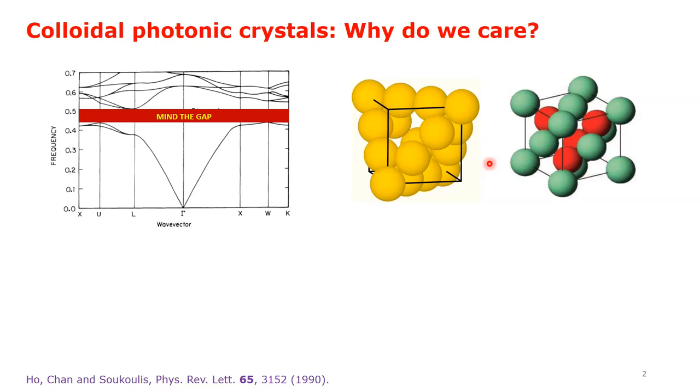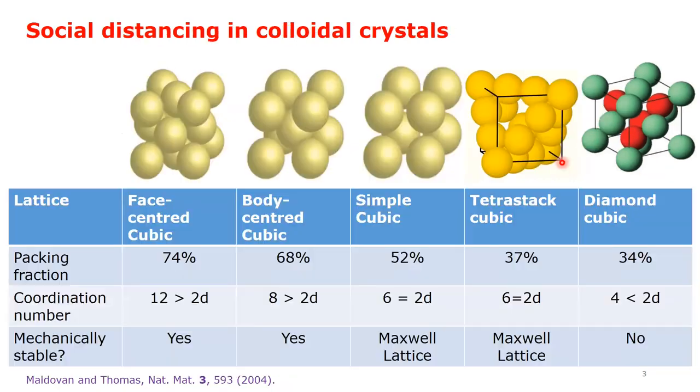Our focus here is on tetrastack and diamond crystals, the cubic polymorphs of which were known to support a complete photonic band gap for relatively low refractive index contrast accessible to colloidal materials.